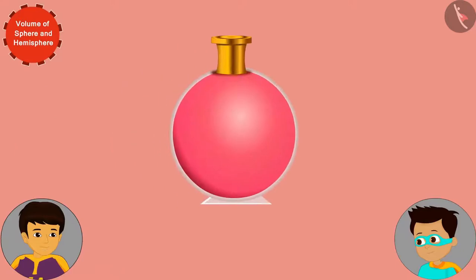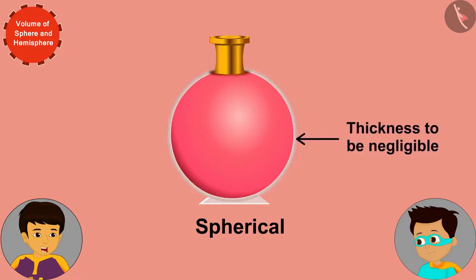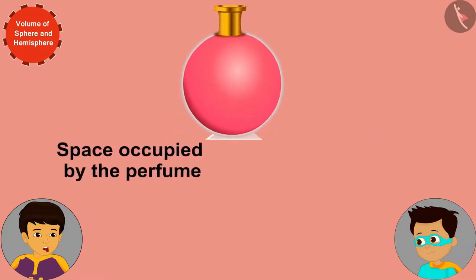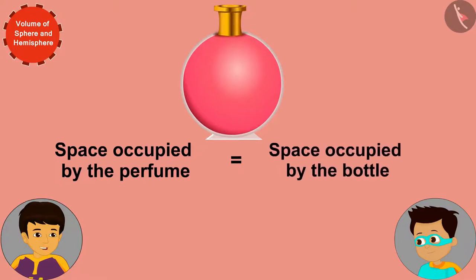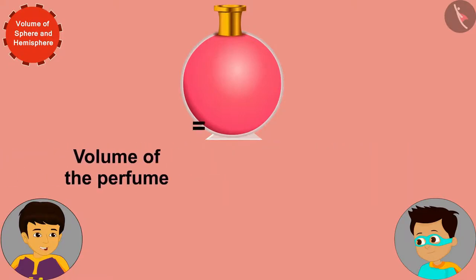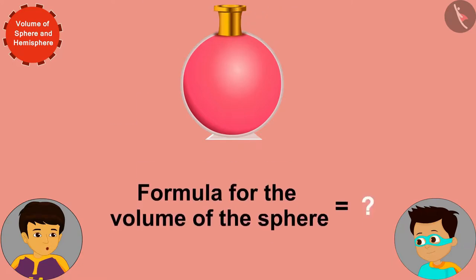The part of the perfume bottle in which the perfume is filled is spherical. Because the bottle is made of thin glass, we consider its thickness to be negligible. Therefore, the space occupied by the perfume in the bottle is equal to the space occupied by the bottle. In other words, the volume of the perfume will be equal to the volume of the spherical bottle. Do you remember the formula for the volume of a sphere?